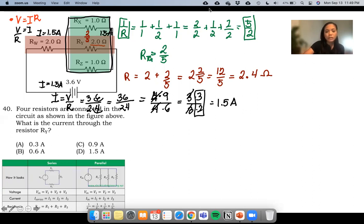How about the voltage? For the voltage, we have 3.6 here. But the voltage here can be computed if we multiply I and R. So the voltage here is 1.5 times 2, so we have 3 volts.